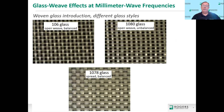Shown here are three different styles of glass fabric. The 106 glass and 1080 glass on top are considered open weave glass — they have bundles of glass fiber with open areas between the bundles. The 106 glass is considered balanced, and the 1080 glass is unbalanced. The 1078 glass on the bottom is considered balanced and a spread glass, which does not have openings between the bundles, acting more like a uniform plane of glass.